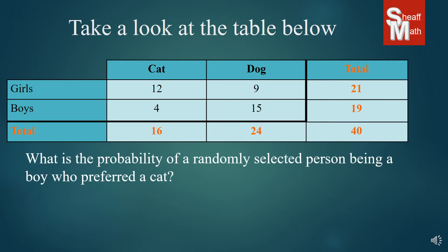Now suppose we have this one. What is the probability of a randomly selected person being a boy who preferred a cat? So again we look at the boys row and the cat column, and 4 of those surveyed were boys who preferred cats. And so of the 40 that were surveyed, the probability is a 4 in 40 chance.